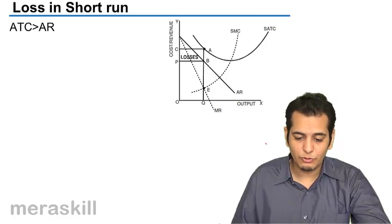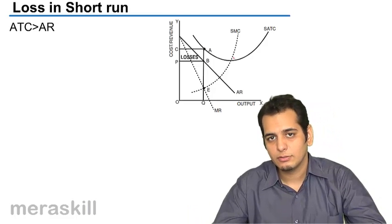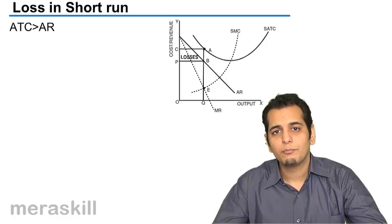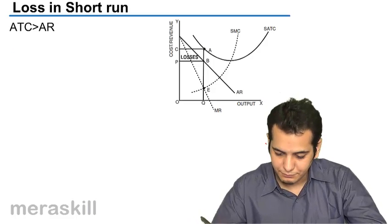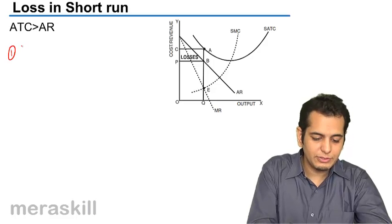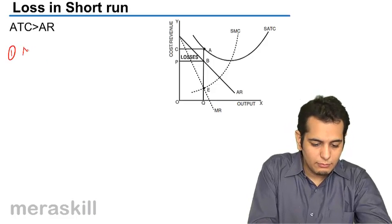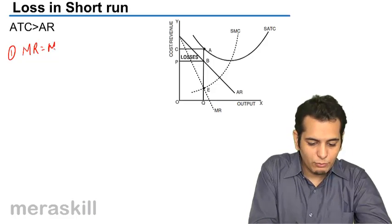Now let's consider a situation of loss for a firm operating under monopoly. The first condition is to find a point where MR equals MC.